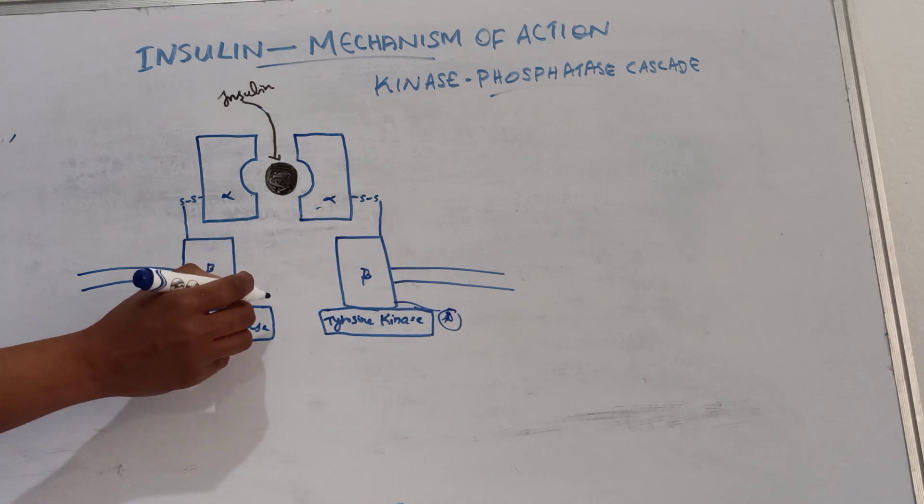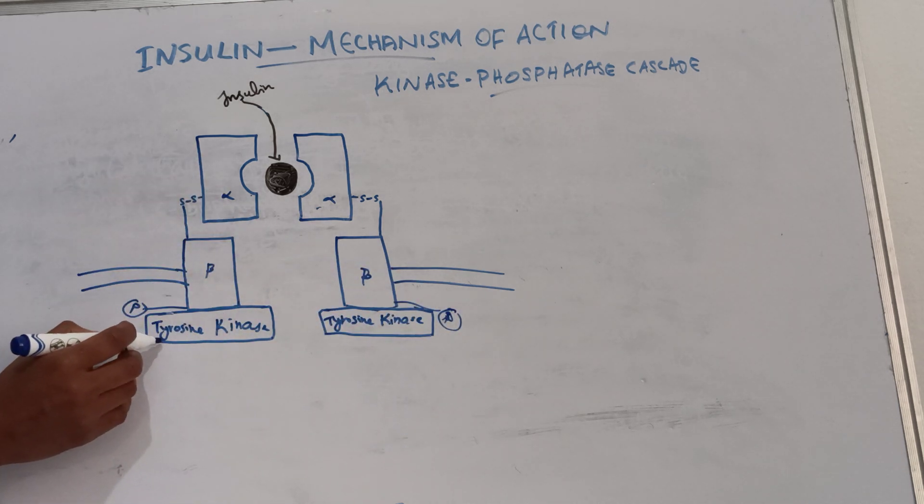This autophosphorylation activates tyrosine kinase which in turn causes phosphorylation of IRS, that is insulin receptor substrate.